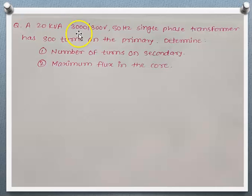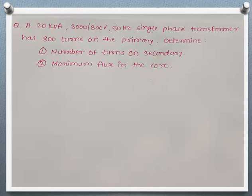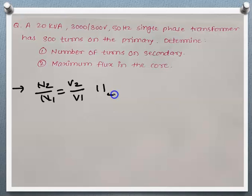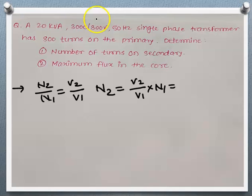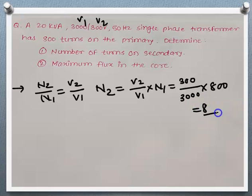Third numerical: A 20 kVA, 3000/300 V, 50 Hz single-phase transformer has 800 turns on the primary. Determine the number of turns on the secondary and the maximum flux in the core. For secondary turns: N2/N1 = V2/V1, so N2 = (300/3000) × 800 = 80 turns.